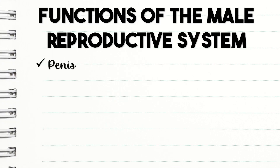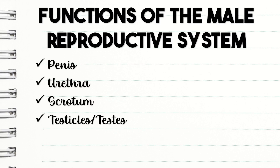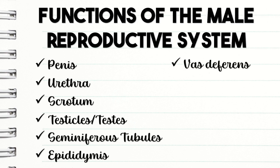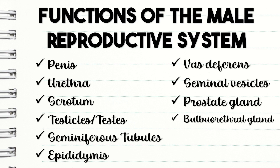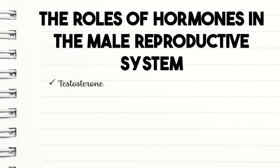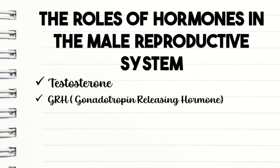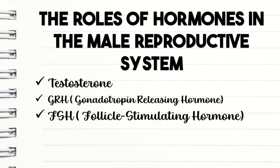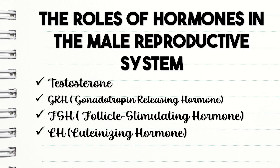To sum it up, these are the parts and functions of the male reproductive system that we talked about: the penis, urethra, scrotum, testicles or testis, seminiferous tubules, epididymis, vas deferens, seminal vesicles, prostate gland, and bulbourethral gland. Also, we discussed the roles of hormones in the male reproductive system, such as testosterone, GRH or gonadotropin-releasing hormone, FSH or follicle-stimulating hormone, and LH or luteinizing hormone.